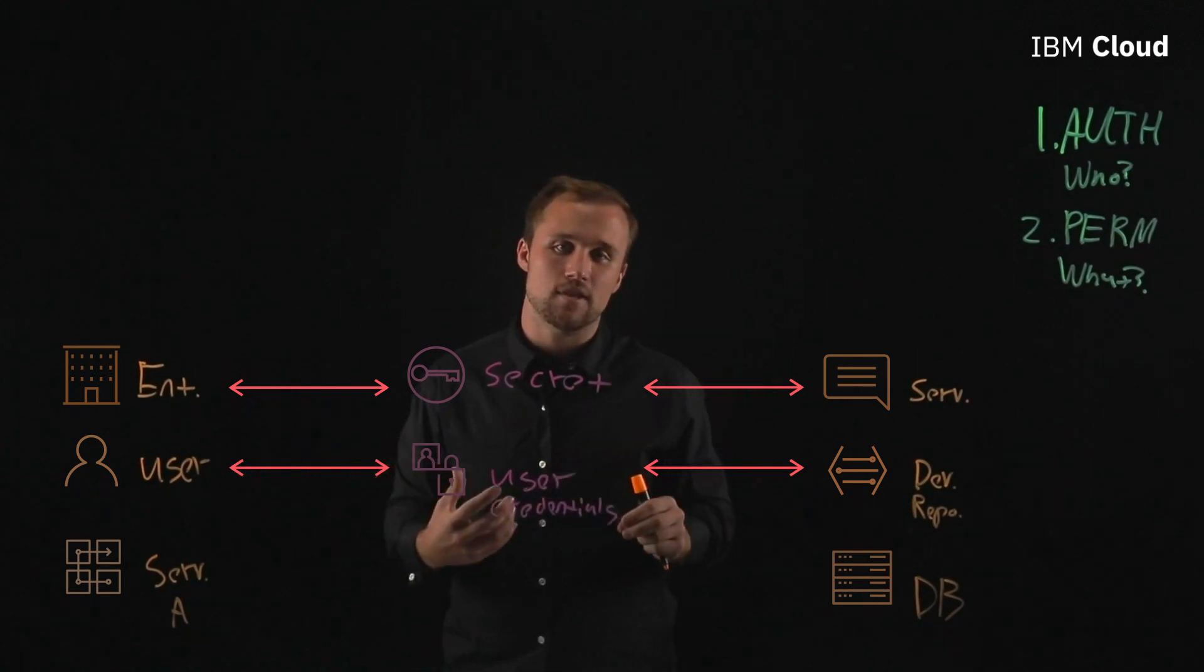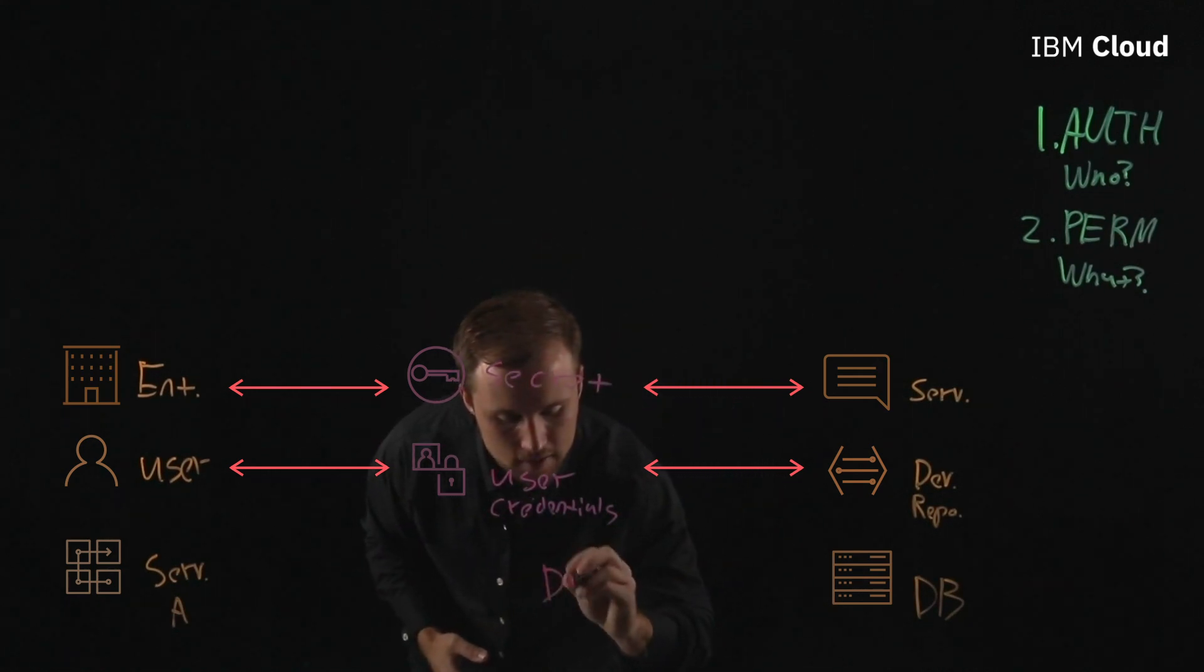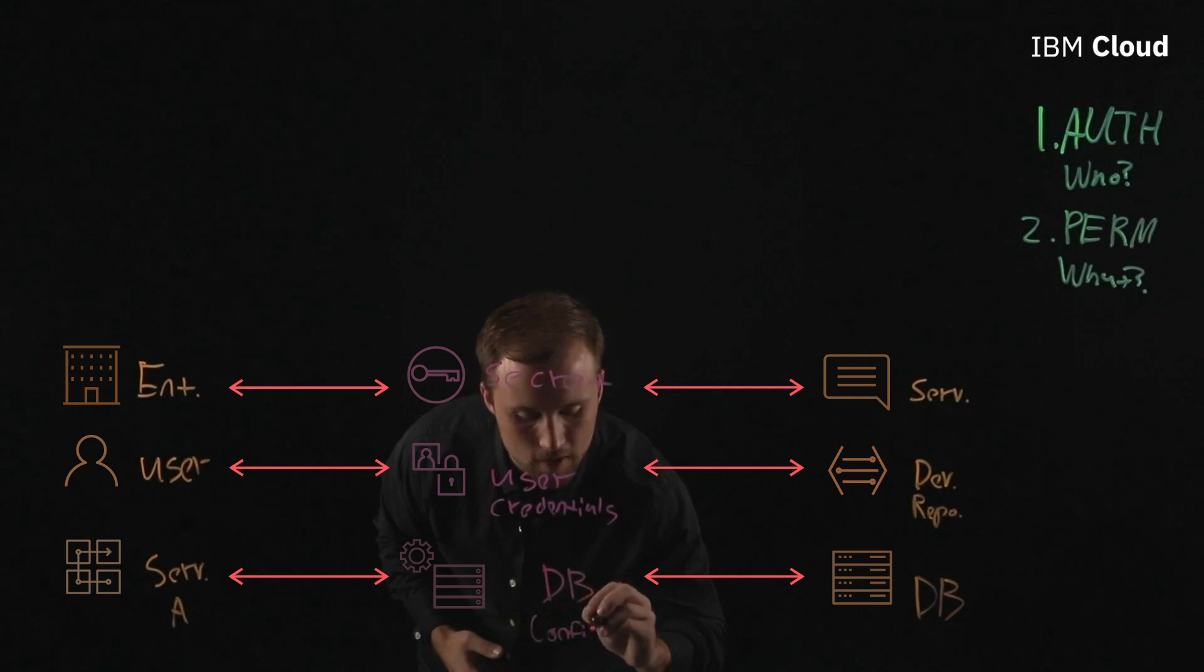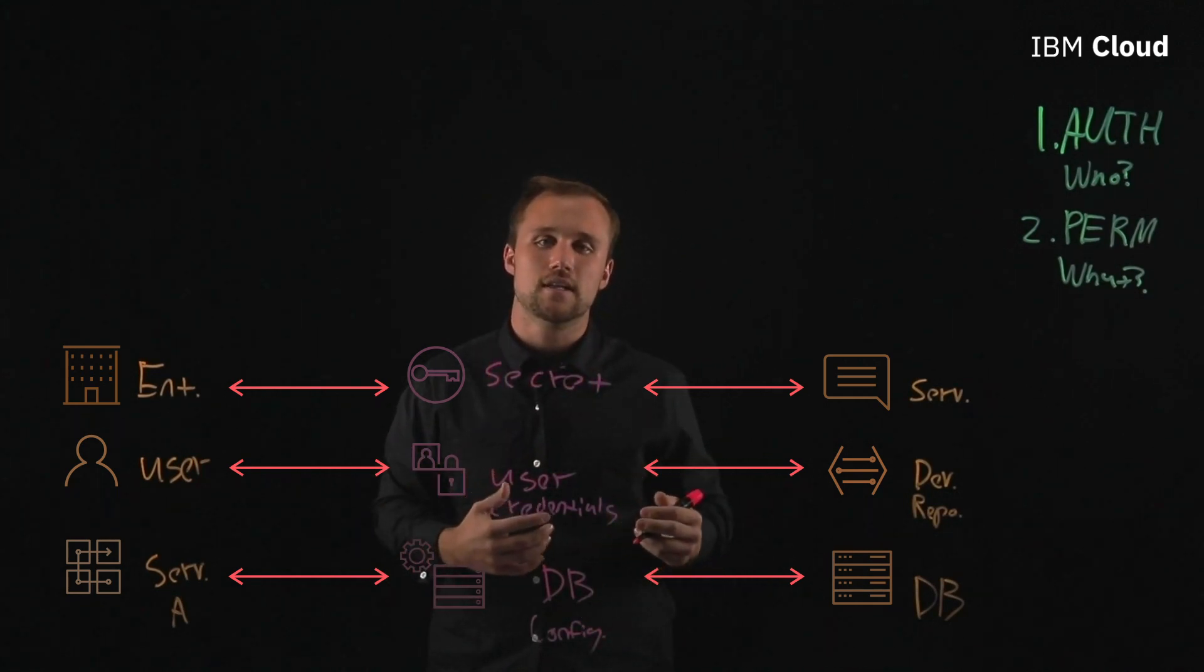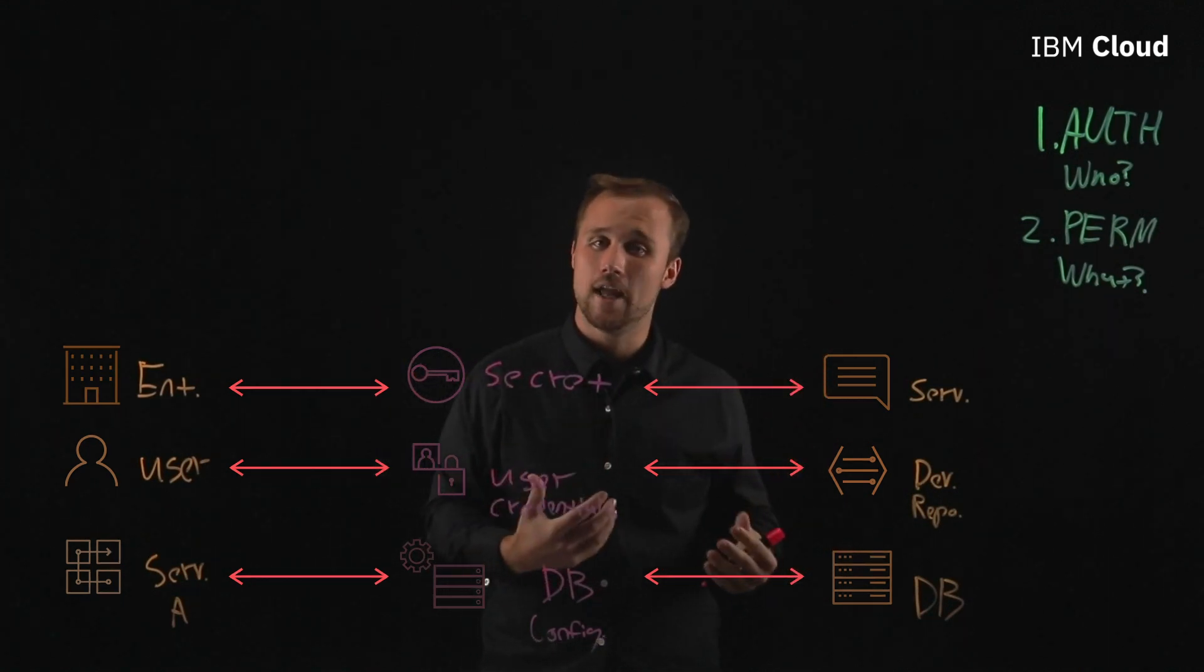So what it needs in the form of a secret here is what we call DB configs. Again this DB config is going to allow it to have the right communication with the service saying this is who I am and this is what I came here to accomplish.